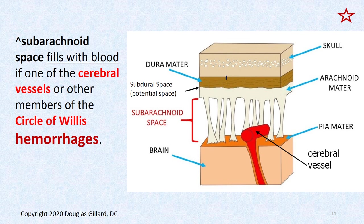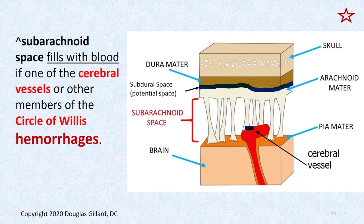You can get hematomas in the potential space between the arachnoid and dura mater — that's a subdural hematoma. Then we have the subarachnoid space. There's the brain, and stuck to the brain is the pia mater. The members of the circle of Willis live kind of stuck on top of the pia mater. So if you get a bleed here, the blood is going to fill the subarachnoid space.